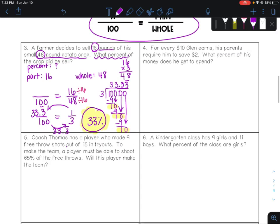Okay, next up. For every $10 Glenn earns, his parents require him to save $2. What percent of his money does he get to spend? So he's going to earn $10, save $2, and we're talking about how much he spends. So if he earned $10, saved $2, then he would have spent the rest, which is $8. So when we do this, we want to talk about how much he spent. So let's use the $8, not the $2, so that we can find our percent.